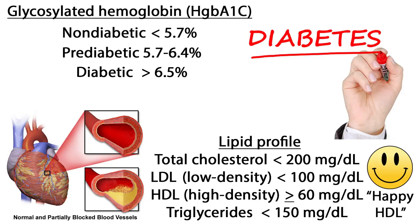LDL should be less than 100 mg per deciliter. The high-density lipoprotein, or HDL cholesterol, measures the cholesterol in HDL particles and is called good because it helps remove cholesterol from the arteries. It should be 60 mg per deciliter or higher to be considered protective against heart disease. You can remember H for happy HDL. Triglycerides should be less than 150 mg per deciliter.